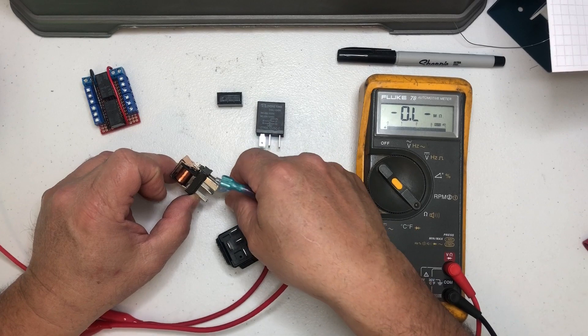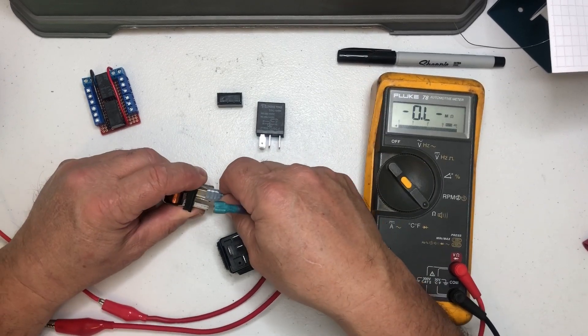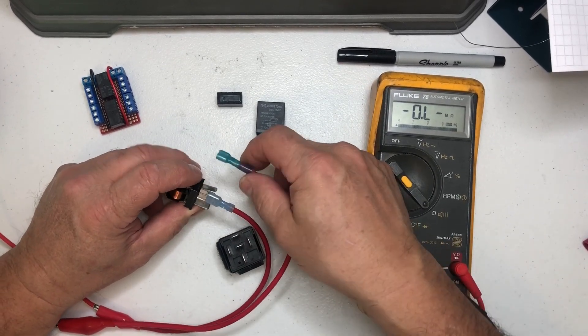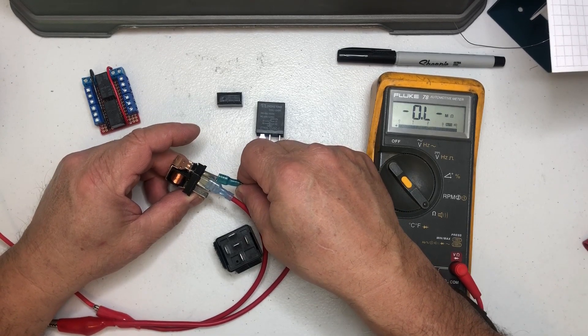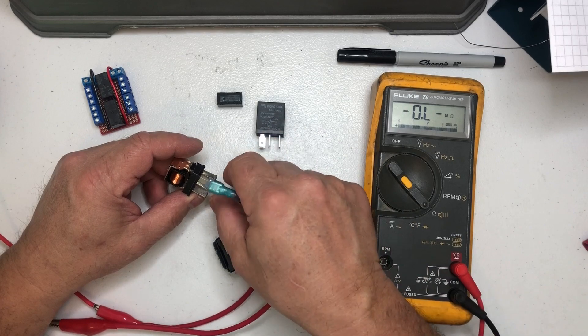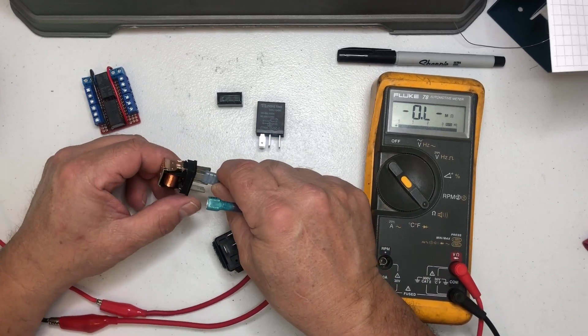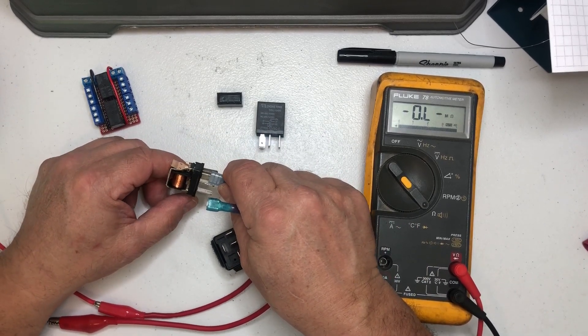So it moves that switch and they're not polarized. I can move that lead there, still works. Just wants voltage to go through it so you can kind of see that's what the inside of a relay looks like.